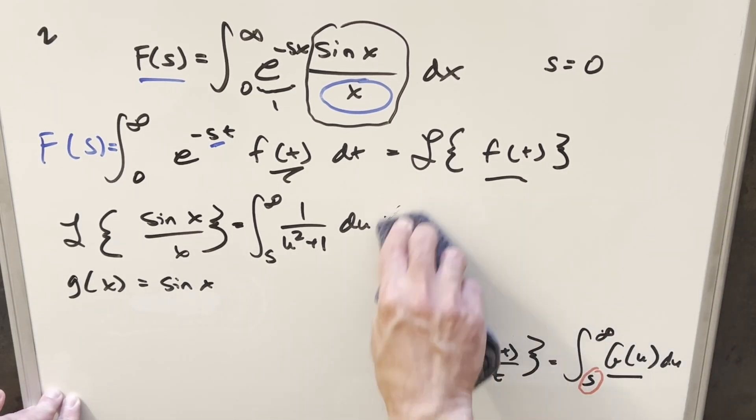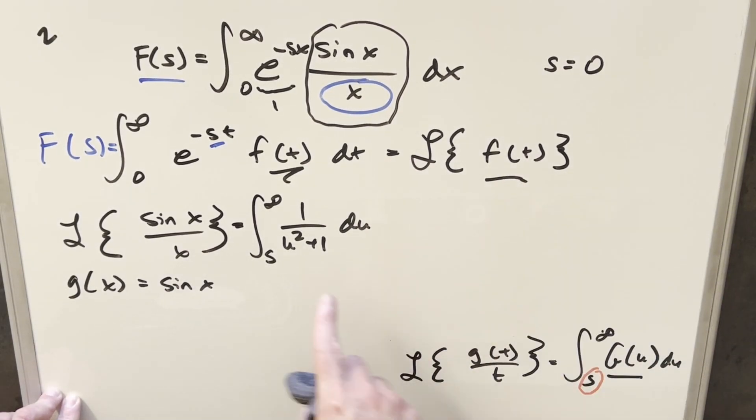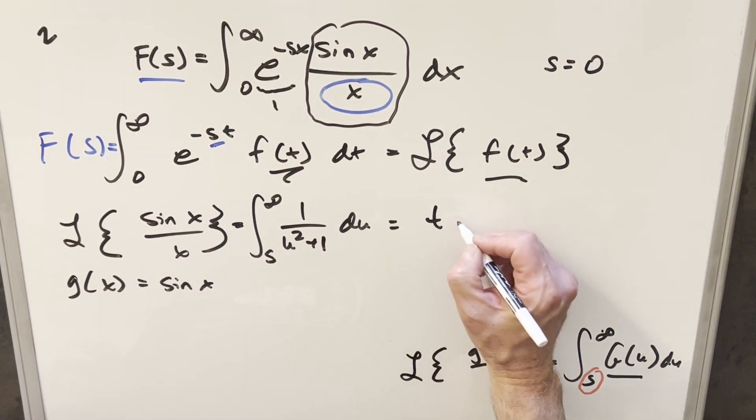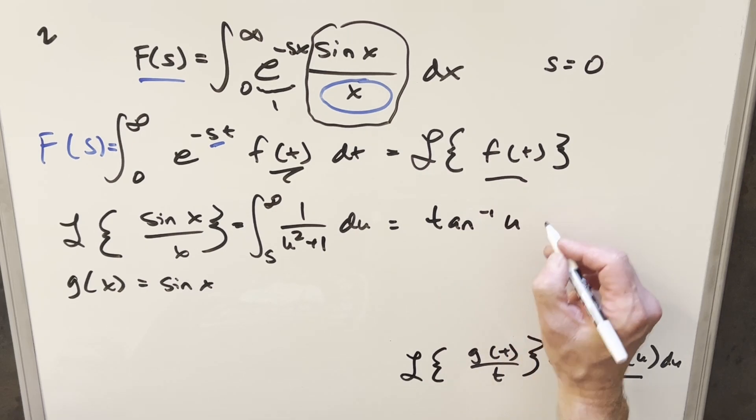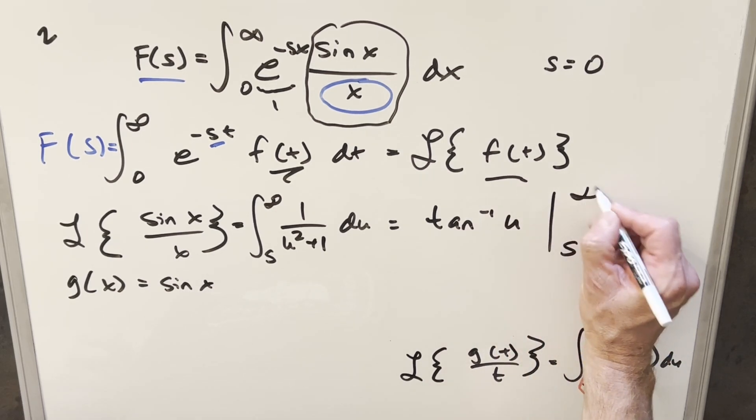So let me get rid of this. We already did this formula, but now this here is an easy integral. We know how to do this. This is just going to be arctan. So evaluating this integral, we're going to get just arctan of u, and this is going to be evaluated from s to infinity.